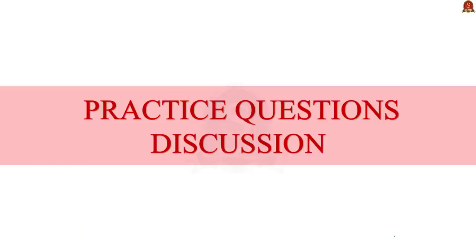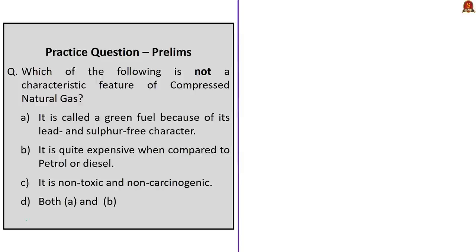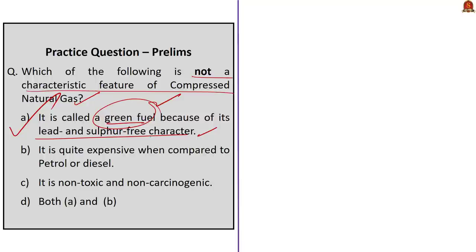With that news article discussion, we have ended the first segment and now move to the practice questions discussion session. The first question asks: which of the following is NOT a characteristic feature of Compressed Natural Gas? Statement A — it is called a green fuel because of its lead and sulfur-free character — is correct. Statement B — it is quite expensive compared to petrol or diesel — is incorrect, because CNG is actually cheaper than petrol or diesel. Statement C — it is non-toxic and non-carcinogenic — is also correct. Therefore, the correct answer is option B.